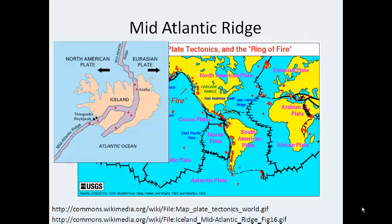Related to the idea of plates was the discovery of the Mid-Atlantic Ridge. Deep under the Atlantic Ocean, scientists used sonar imaging to discover a ridge — a sort of underwater mountain range — running between North and South America on one side and Africa and Europe on the other. Previously, scientists thought the ocean floor was flat, so finding mountains there was quite a surprise, and mysterious without the explanation of tectonic plates moving.